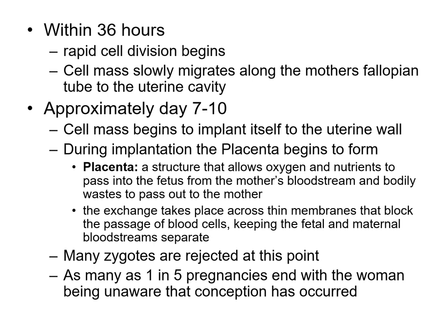The placenta is an organ the mother creates to support the life of the baby growing inside her. It allows oxygen and nutrients to pass from the mother's blood to the fetus through capillary interaction, while keeping the fetal and maternal bloodstreams separate across thin membranes. Many pregnancies are rejected at this point due to biological incompatibility or the body not being prepared — about one in five, or 20%, end without the woman ever being aware she was pregnant. It would just look like a regular period.